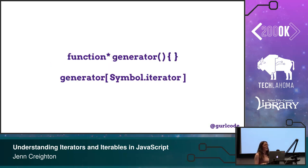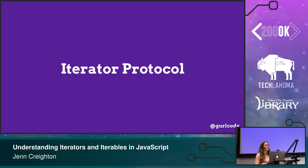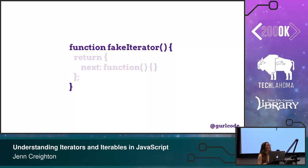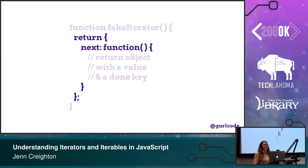An array is an iterable because it puts in place the iterable protocol, which says that at the key symbol.iterator, you're going to provide back an iterator. If you go to array.prototype and request its symbol.iterator, you're going to see a function there. The same for string and the same for generators — these all have iterators that live on them at this key.